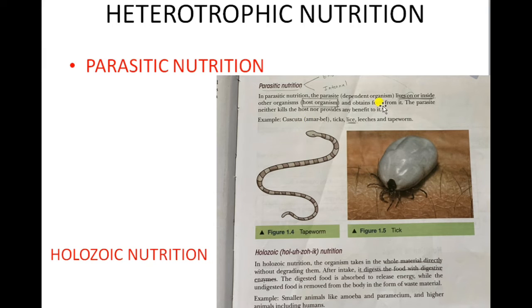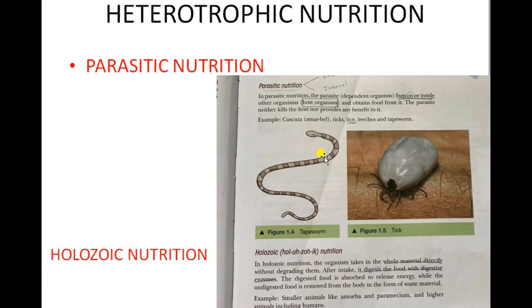Parasites may be external or internal. If a parasite lives outside the body of the host it is known as an external parasite — examples: lice, leech. Parasites which live inside the body of a host are known as internal parasites — example: tapeworm.